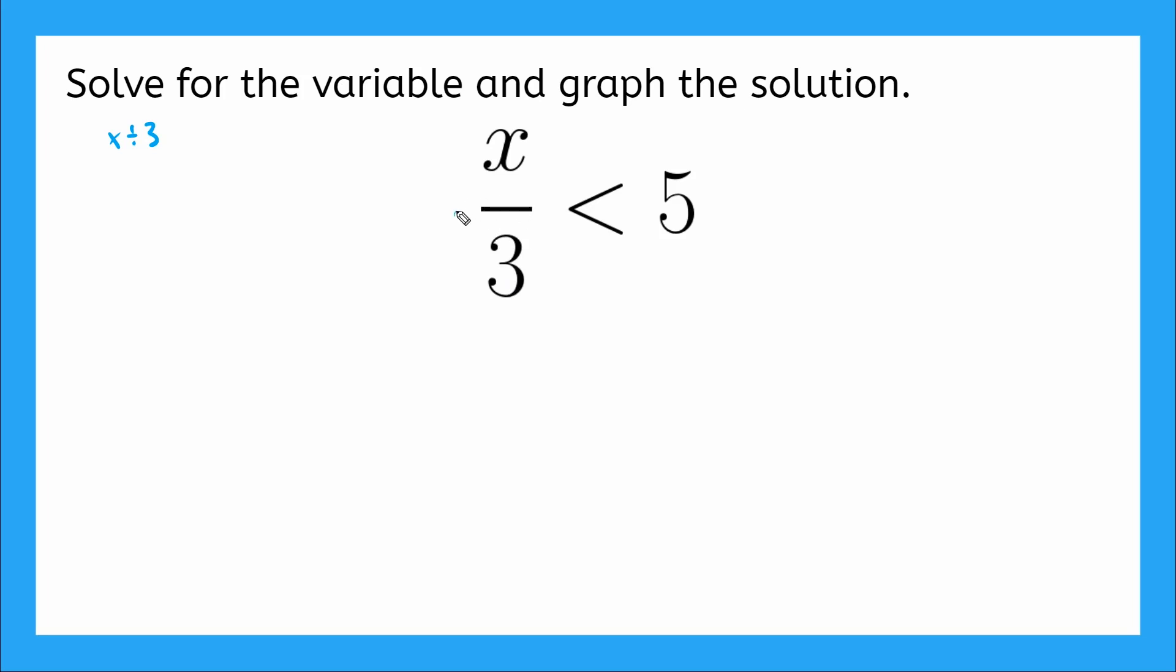Yeah, I can multiply, right? So if I multiply over here by 3, what do I do over here? The same thing. Multiply by 3. So my 3s will cancel out. I'm left with x is less than 5 times 3 is 15.